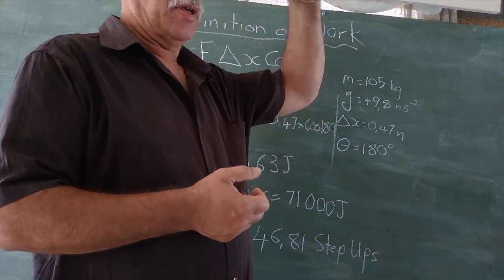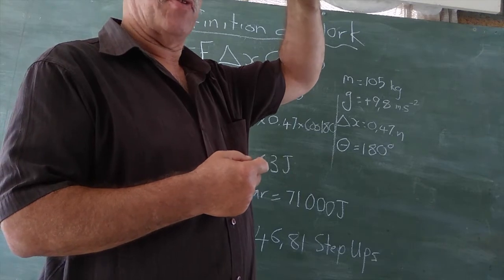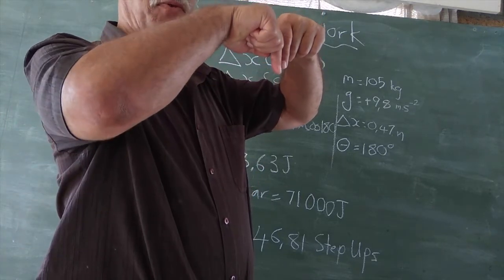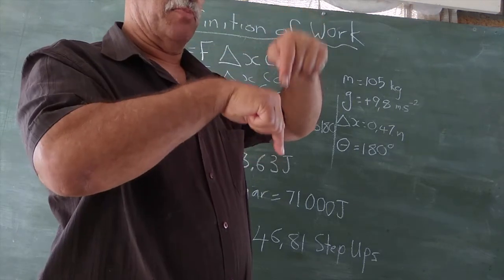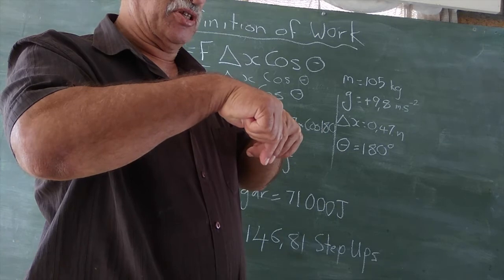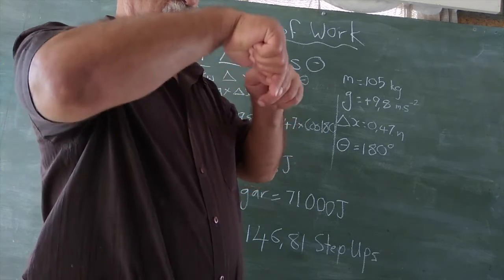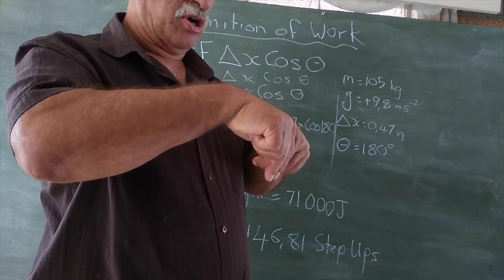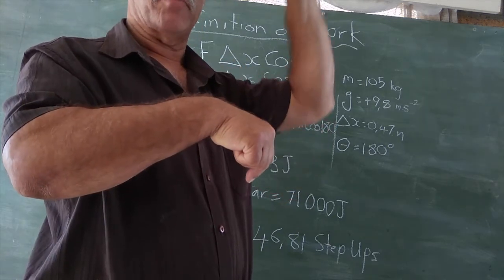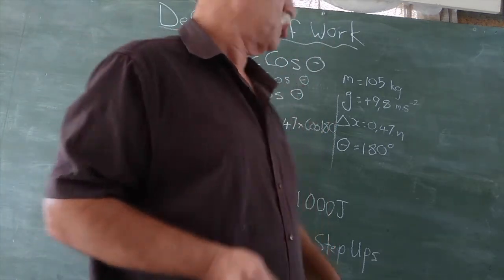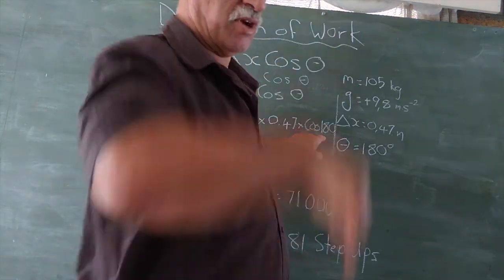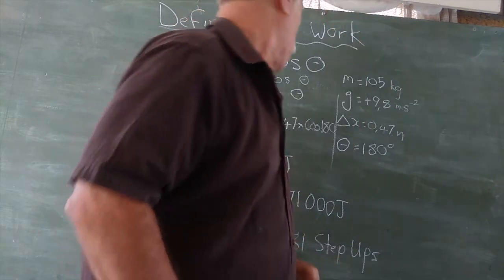Theta is measured from the direction you're going to the direction of the force. Now, the force is the weight. Weight is always down. But we are going up. So, when you measure the angle from me stepping up, there's the force pointing down. We start there and we measure 180 degrees. I'm going up. I'm going exactly opposite to the force. So, this is cos 180. 180 is the difference in degrees between the direction we're moving and the direction of the force.